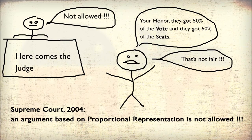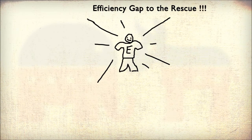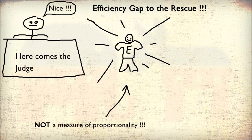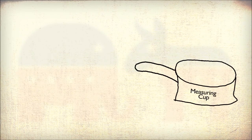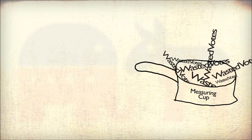This is where the efficiency gap comes in. The efficiency gap measures how likely it is that a state has been gerrymandered, and the courts have accepted the efficiency gap because they do not look at it as a measure of proportionality. But what does the efficiency gap actually measure? It measures wasted votes.